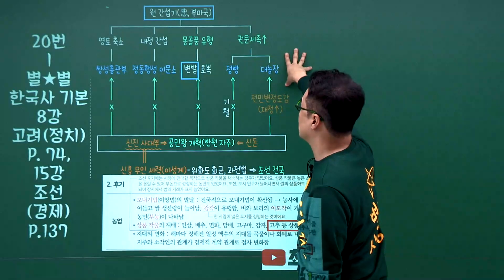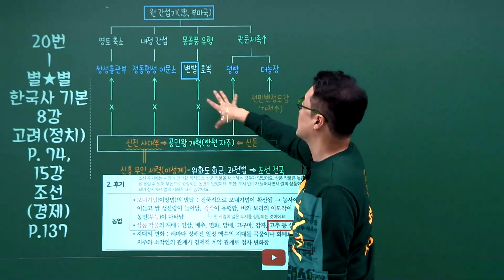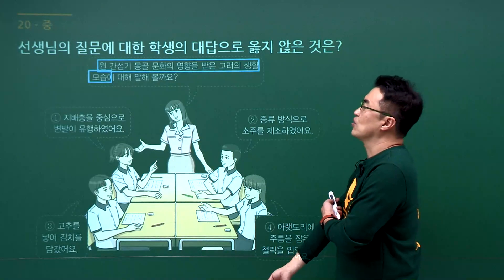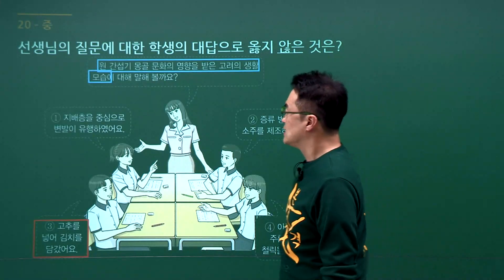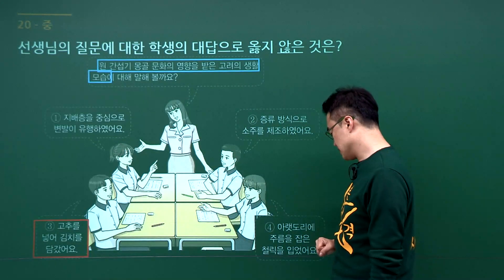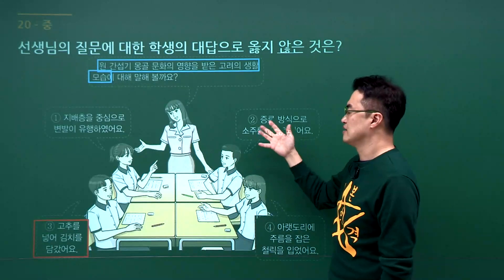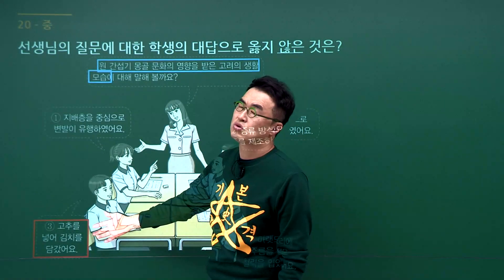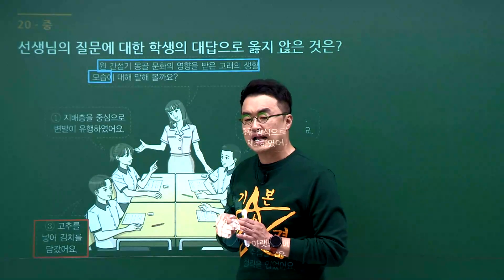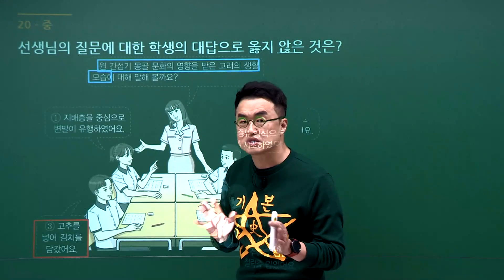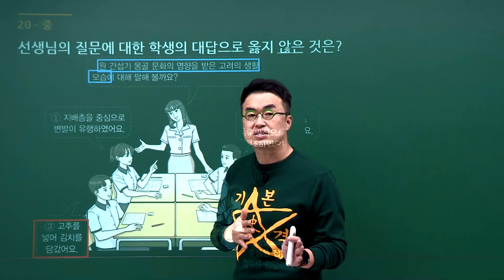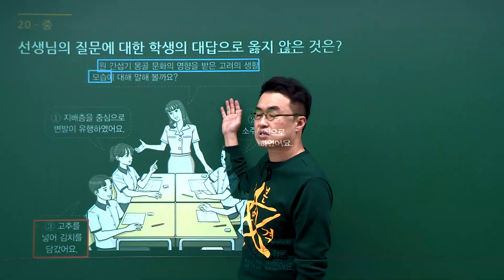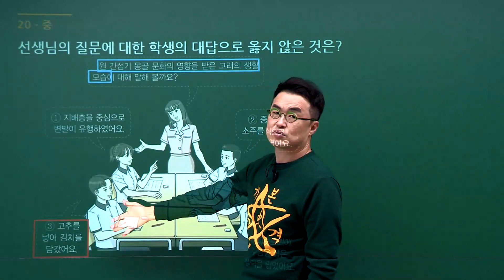원간섭기 문화 문제입니다. 원간섭기에 변발을 했던 고려의 모습들이 나옵니다. 몽골 문화의 영향을 받은 고려의 생활 모습으로 변발, 소주, 아랫도리 주름 등이 있습니다. 반면 고추를 넣어 김치를 담갔다는 것은 임진왜란 이후에 나오는 것입니다. 임진왜란 이전 우리 전통김치는 백김치였으며 임진왜란 이후 고추가 들어오면서 빨간 김치가 생겼습니다. 이건 고려시대 모습이 아니므로 정답은 3번입니다.